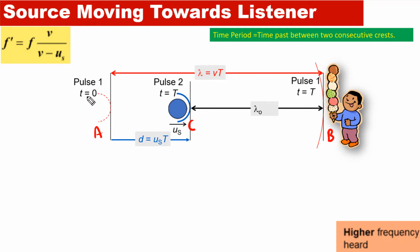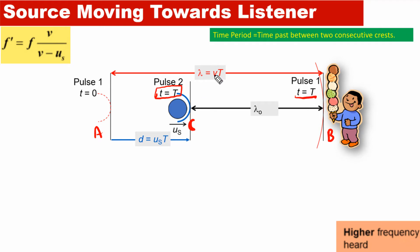When the source was at point A, it produced pulse 1 at time t = 0. This pulse moved from point A to point B in time t = T, where T is the time period of the wave. In that same time period, the source also traveled a distance equal to the speed of source times the time period, reaching point C, where it produced pulse 2. Let's call the distance from A to B as D1, and the distance traveled by the source as D2.